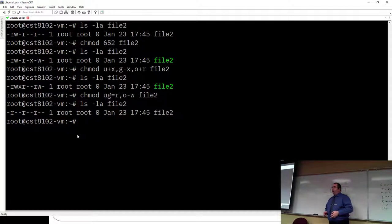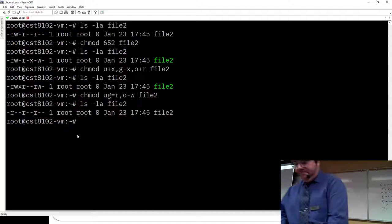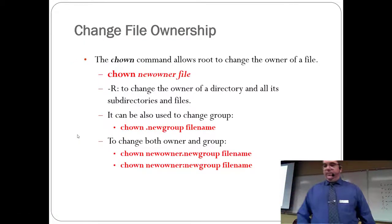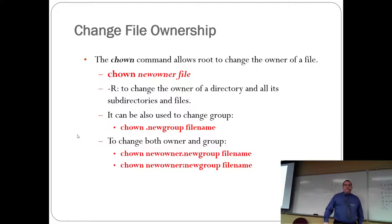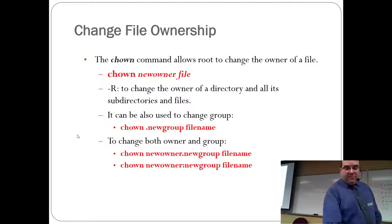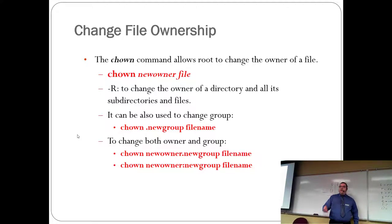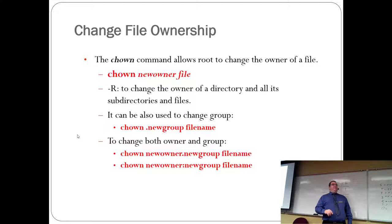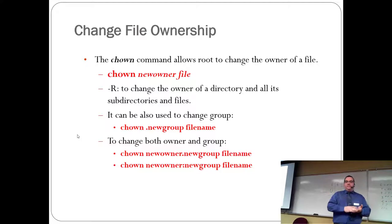Those are the ways you can flip the permission switches using numbers, absolute values, and symbolic methods. Now, changing ownership: if you want to change the owner of a file, the command is chown — change owner. It's fairly straightforward: chown, give it who the owner is, and then the file name. As with chmod, there's also dash capital R for recursive changes going down a directory tree.